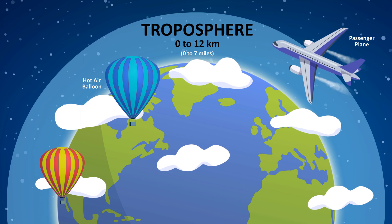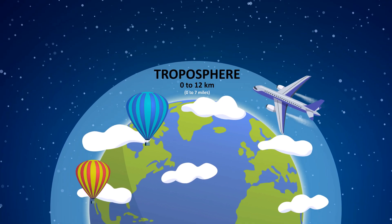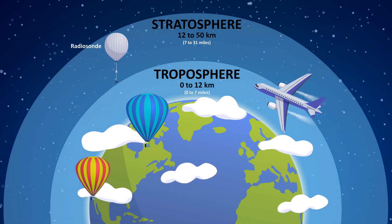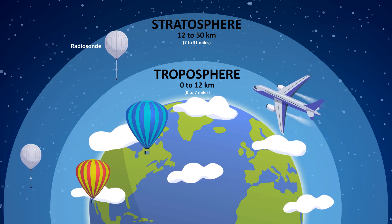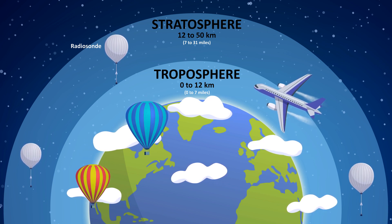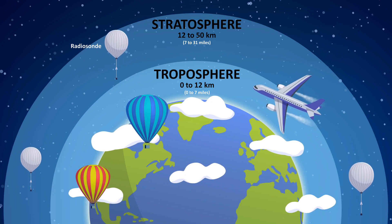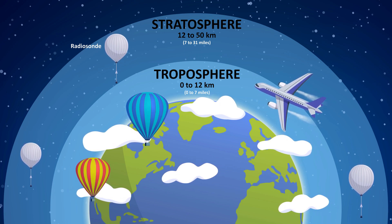The troposphere is where weather happens and contains the air humans breathe. The temperature of the troposphere decreases with height. Stratosphere: above the troposphere is the stratosphere. This layer is where the ozone layer exists and scientists send weather balloons. Jets fly in the lower stratosphere to avoid turbulence in the troposphere.